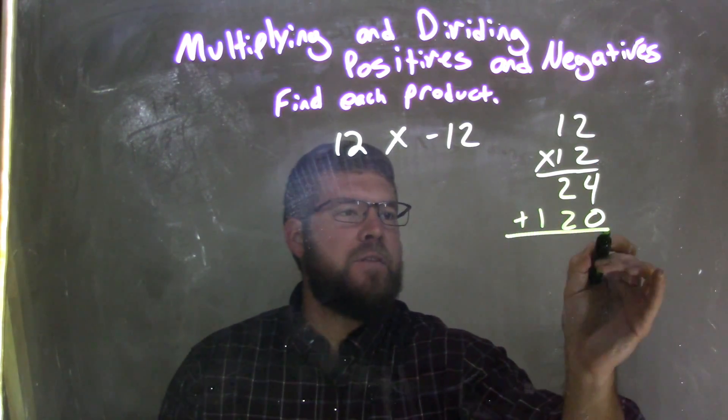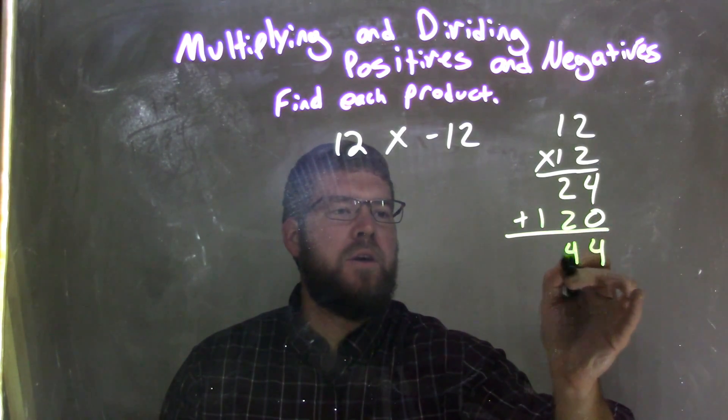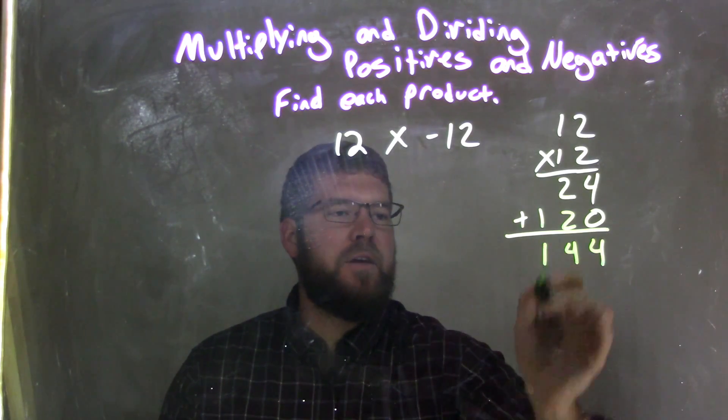Now we add these two numbers together. 4 plus 0 is 4. 2 plus 2 is 4. And 1 comes down. We have 144.